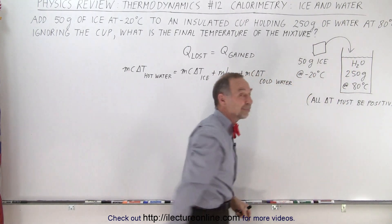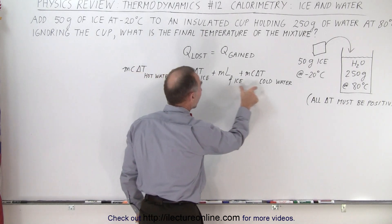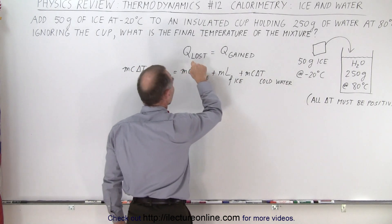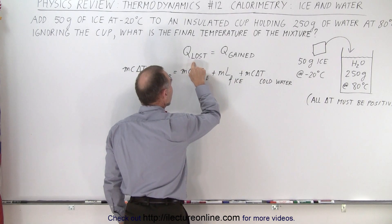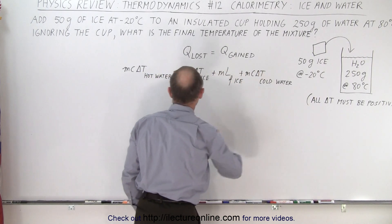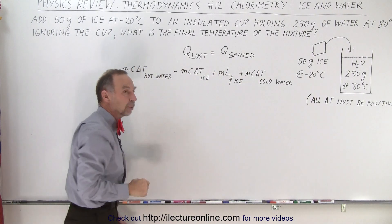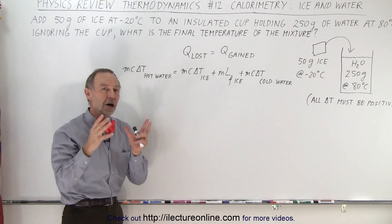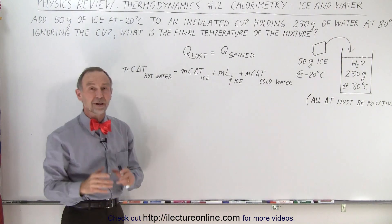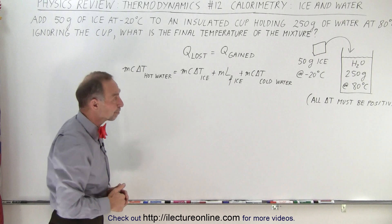The cold water will then reach the same temperature as the hot water as it comes down in temperature until they're both at the same temperature. So we have three parts where we're gaining heat: the ice getting warmer, the ice melting, and the cold water getting warmer — and one term on the left side where we're losing heat: the hot water. We're ignoring the cup for this problem just to make things simple.